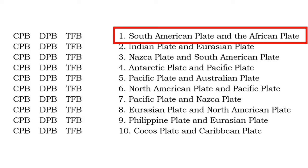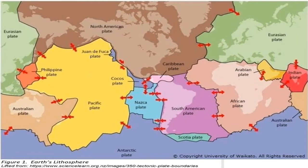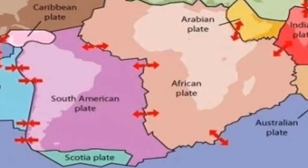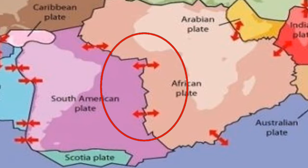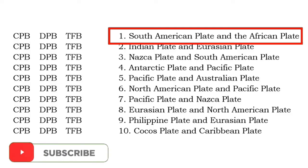For example, in number 1, what plate boundary exists between the South American plate and the African plate? Let's take a closer look. Do you see the arrows which tend to move away from each other? This shows a divergent plate boundary. Therefore, the answer in number 1 is DPB.